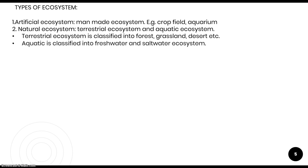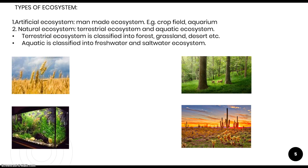On the other hand, aquatic ecosystems can be differentiated into two types: freshwater ecosystems, like ponds and lakes, and saltwater ecosystems like oceans and seas. Crop fields and aquariums are man-made or artificial ecosystems, whereas forests and deserts are made by nature itself and are natural ecosystems.